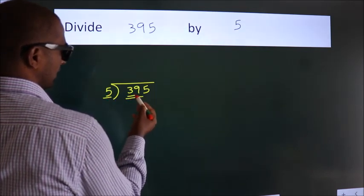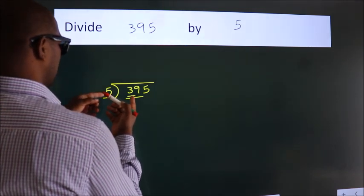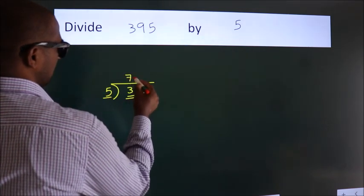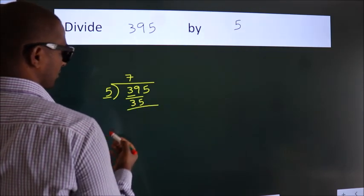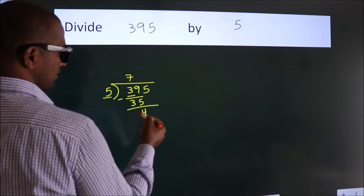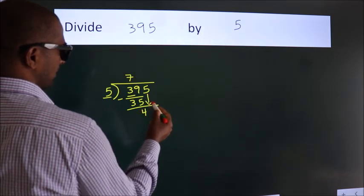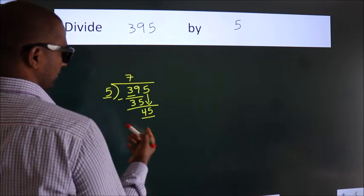A number close to 39 in the 5 table is 5 times 7 equals 35. Now we should subtract. We get 4. After this, bring down the next number, 5, so we have 45.